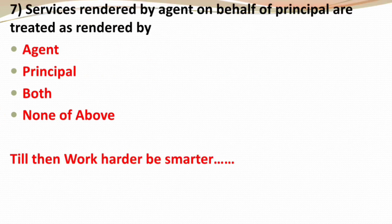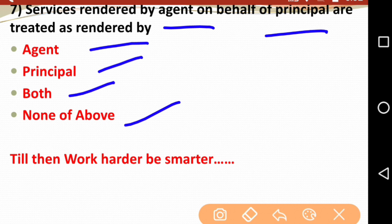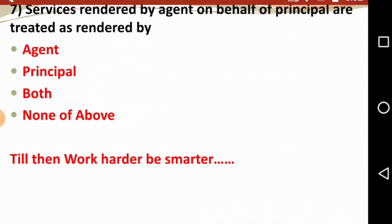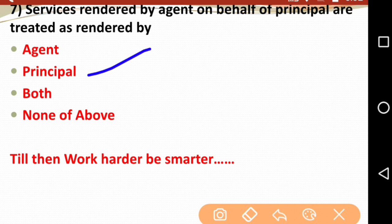Last question: Services rendered by an agent on behalf of a principal are treated as rendered by — Agent, Principal, Both, or None of the Above? Both and None of the Above can be eliminated. Since the agent is rendering services on behalf of the principal, the correct answer is Principal.